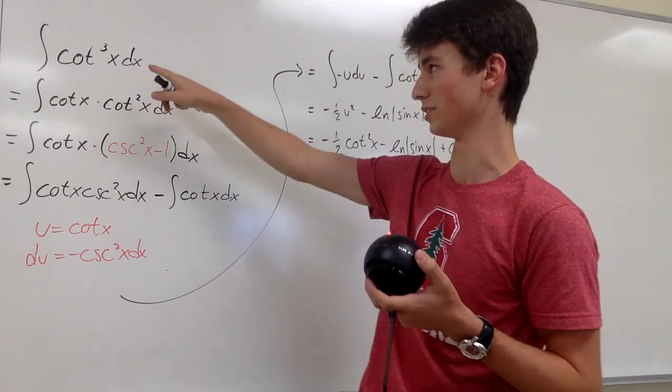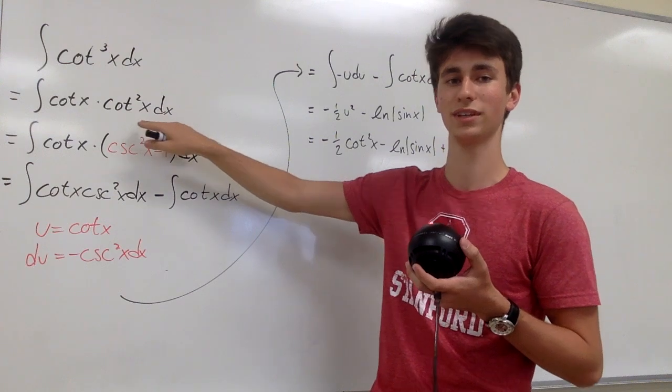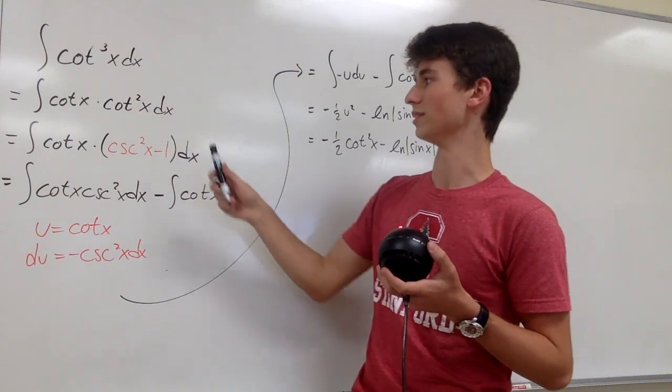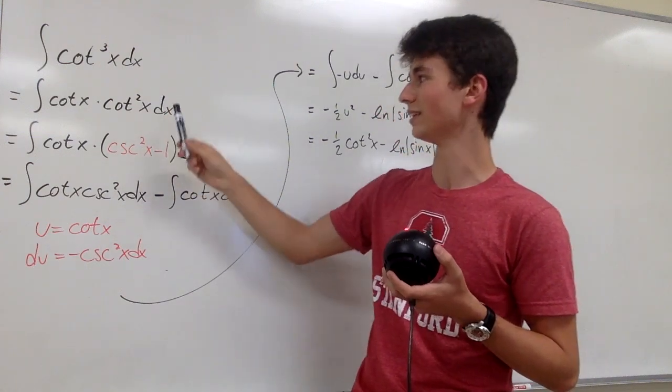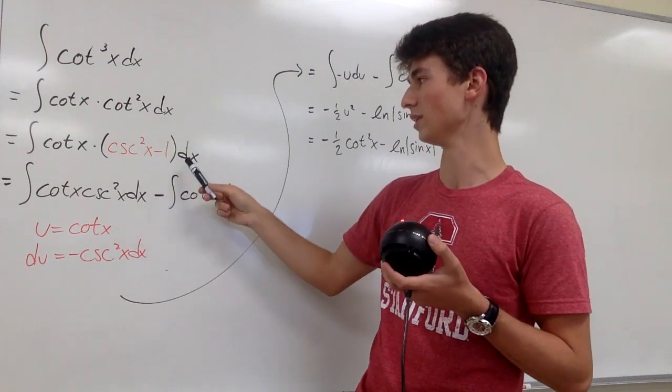And we're going to start by splitting cotangent cubed into cotangent to the first power times cotangent squared of x. And then we can use the trigonometric identity that cotangent squared of x is equal to cosecant squared of x minus 1.